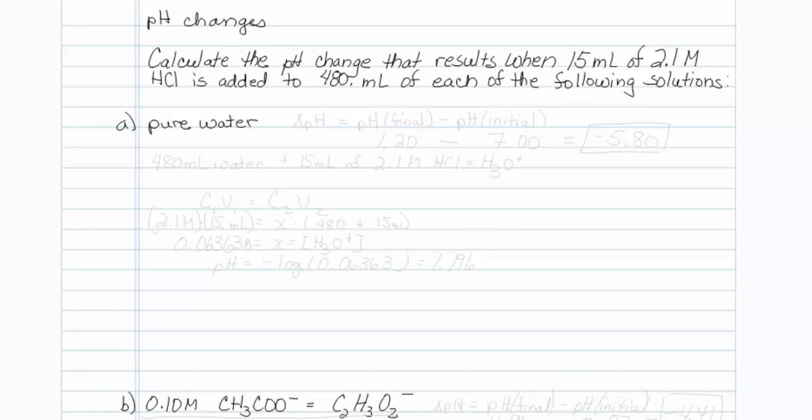This is going to be a two page video to help with the problem involving pH changes because we have to calculate the pH before and the pH after. So when it asks for pH change, delta pH, any chemistry has pH final minus pH initial.